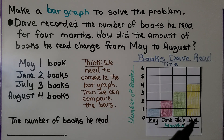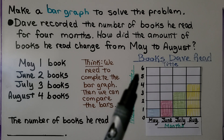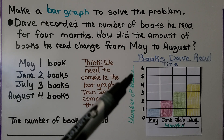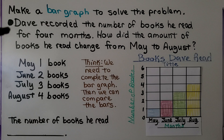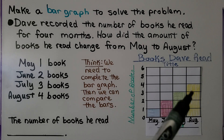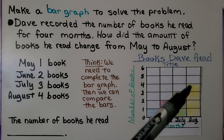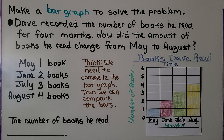August is abbreviated here, and I labeled it 'months.' I gave it the title 'Books Dave Read.' For the scale, I labeled it 'number of books.' Now we can answer how the amount of books changed from May to August. We can see May is 1 and August is 4, and each bar gets a little bit higher — so we can say the number of books he read increased.